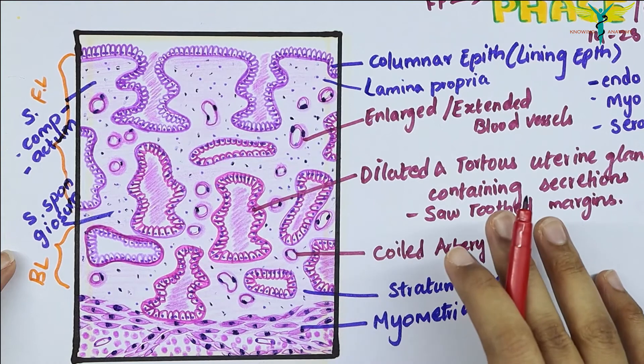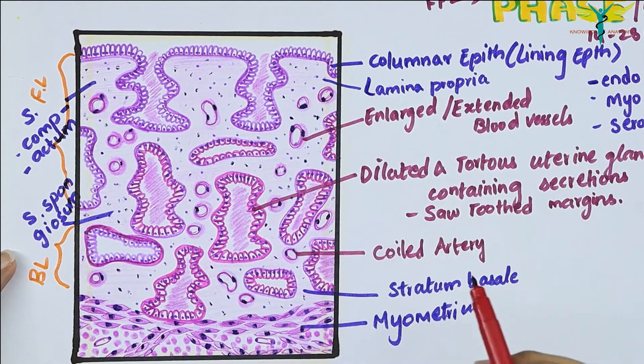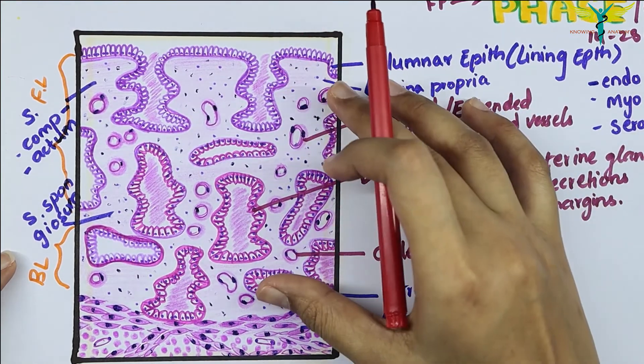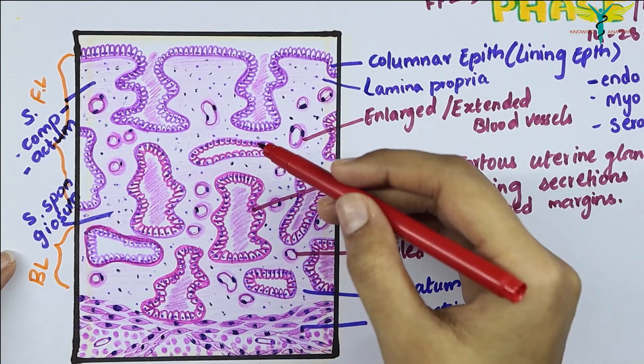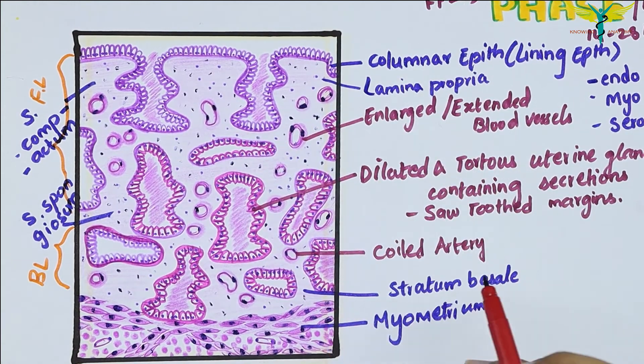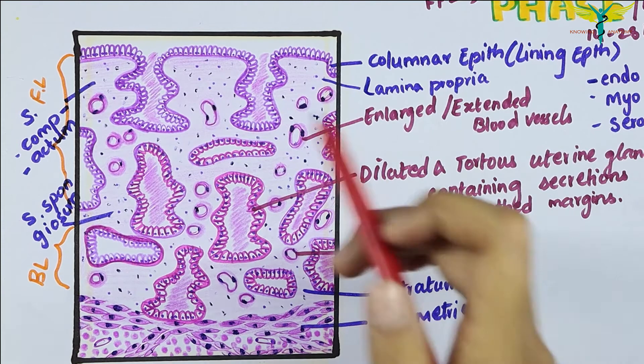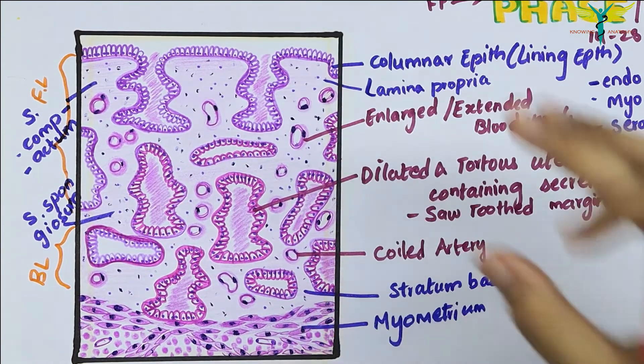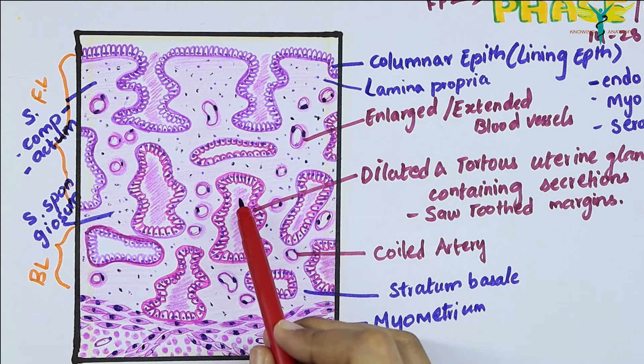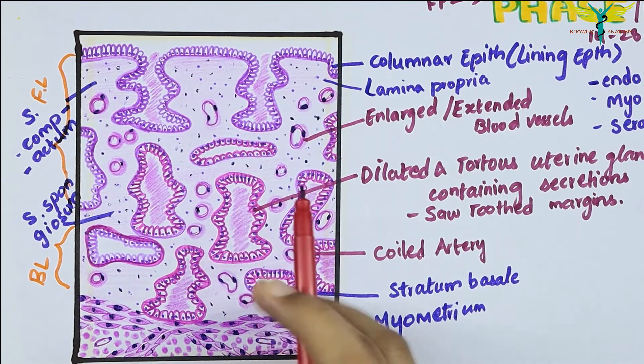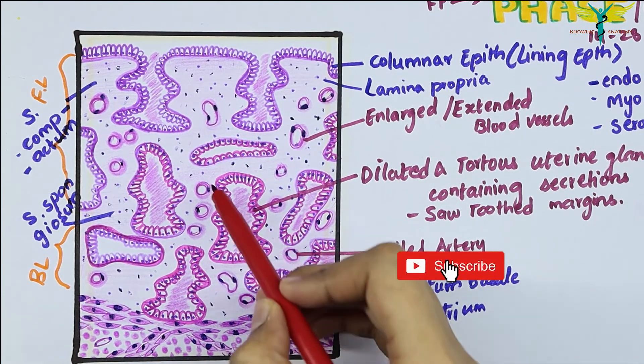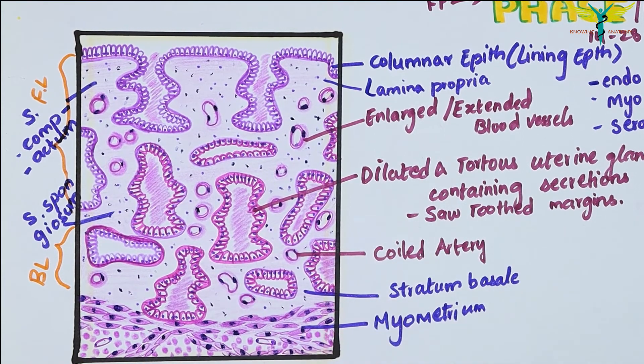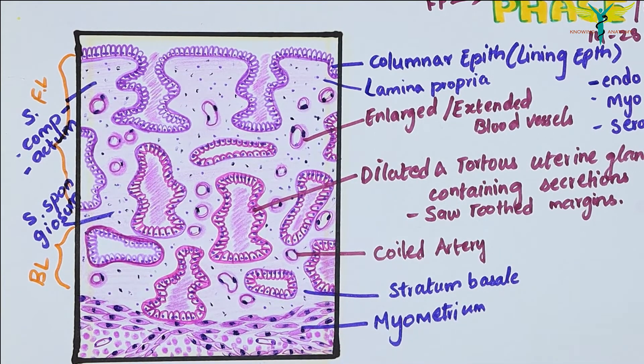It's easy to distinguish between the secretory phase and the proliferative phase of the uterus because the endometrium becomes so distinctive that the uterus cannot be confused with any other organ. You can see the dilated and tortuous uterine glands, the thickness of endometrium increases, and these tortuous dilated uterine glands contain secretions and they look like saw tooth margins.